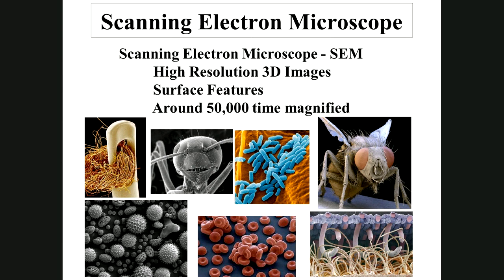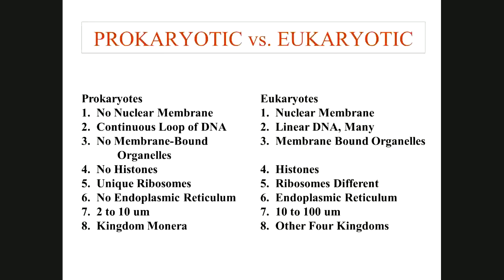Both electron microscopes typically require the specimen to be in a vacuum, which removes floating debris so electron beams are not deflected. The images can be colorized — which makes structures stand out better. You'll see several colorized and non-colorized specimens in this chapter.